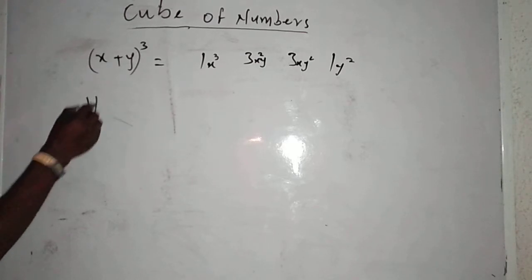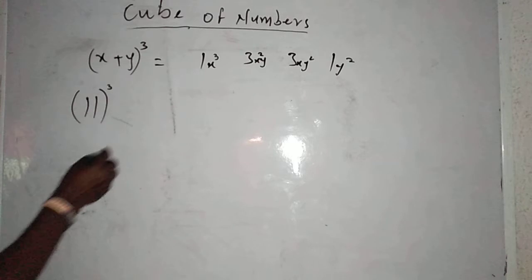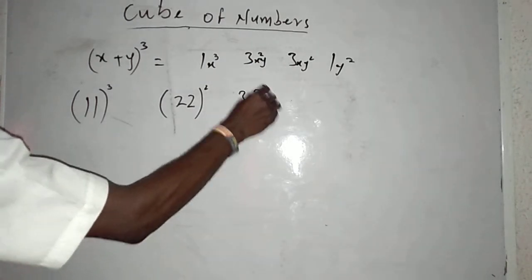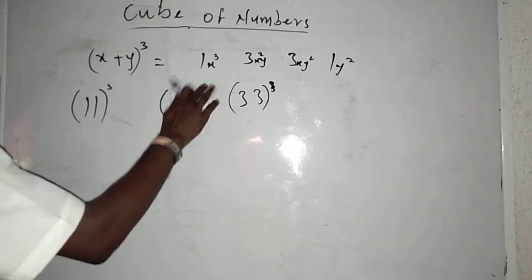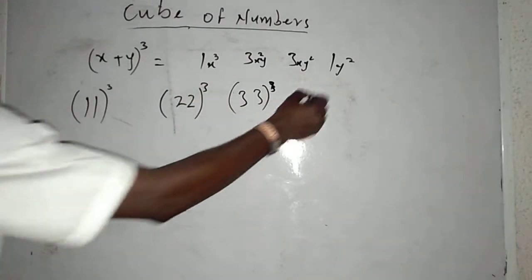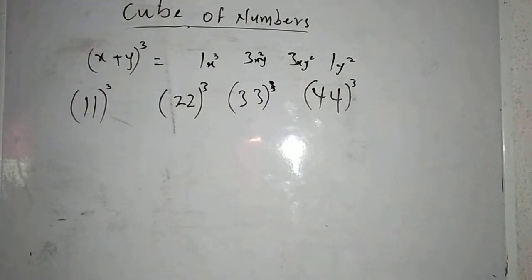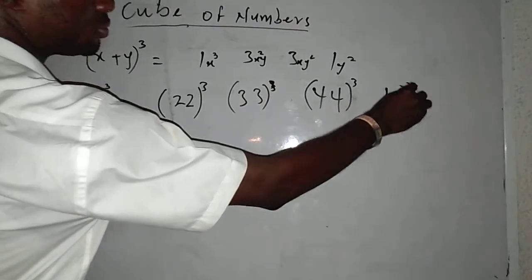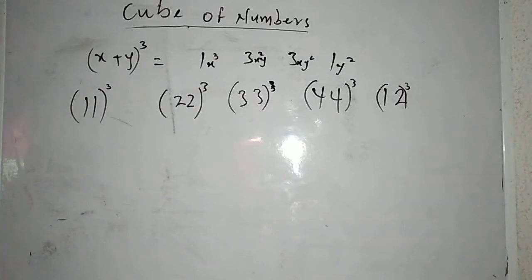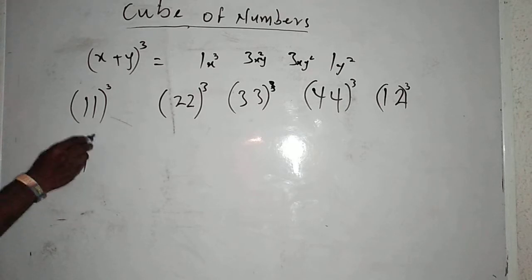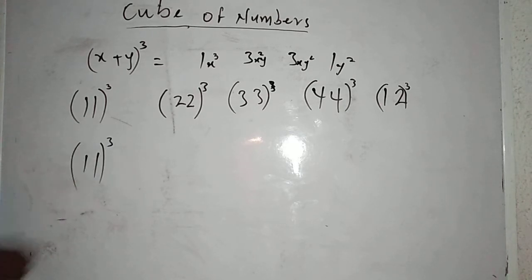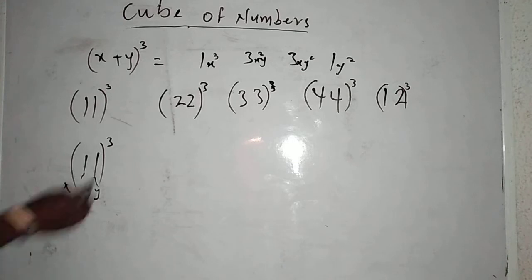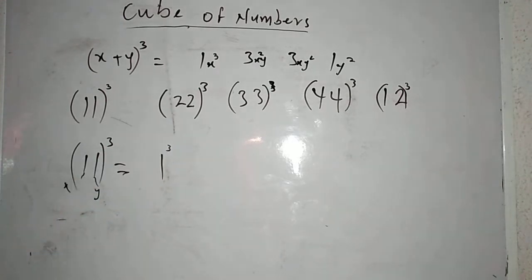Let me write down some numbers. I have 11 cubed, 22 cubed, 33 cubed — let me just work with those double-digit numbers. This is not square, this is cube. I have 44 cubed, and I have 12 cubed. Now, if I have the first number, 11 raised to power 3 — this digit is standing for x, while this one is standing for y.